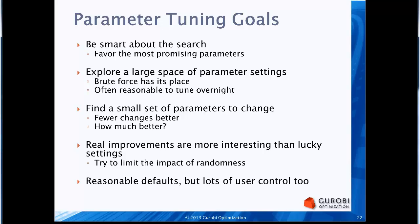Rather than discarding a set of parameters that produces a good result just because it has ten changes, we present a list of parameter sets that produce good results and let you choose. We try to limit the impact of randomness on the results. Finally, we've tried to choose reasonable default settings in the tuning tool — you can just fire it off with no changes at all — but we've also provided a fair amount of user control over the tuning process.